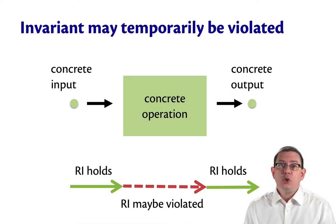That's just like how in the body of a loop, a loop invariant might temporarily not hold, but eventually by the end of the loop body, it's restored.